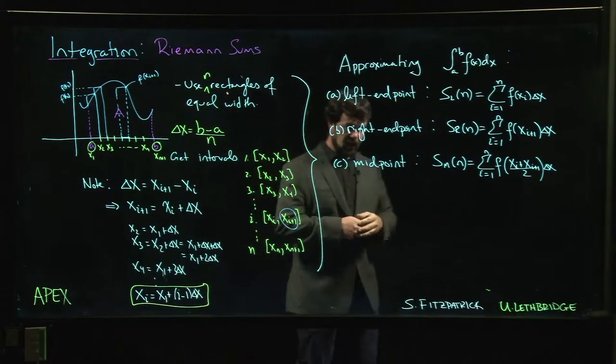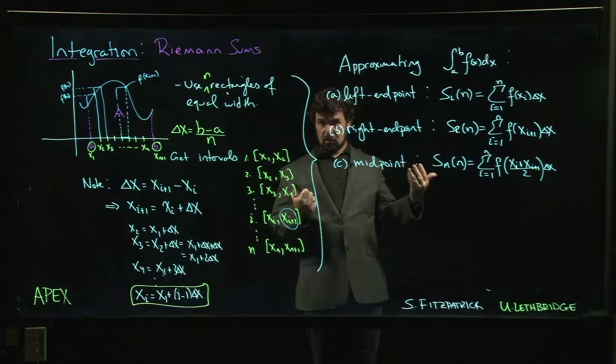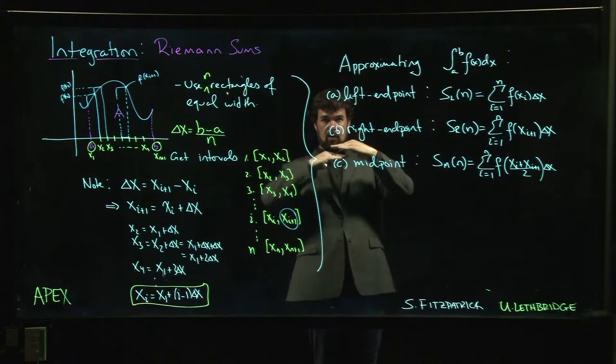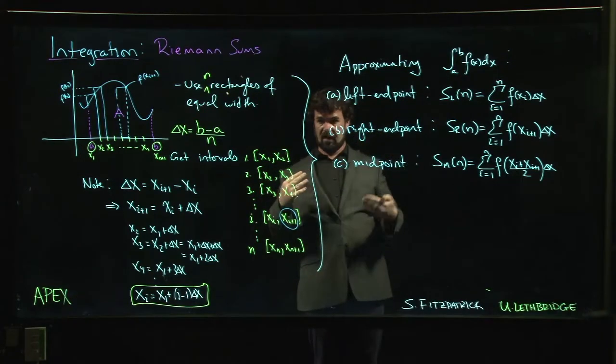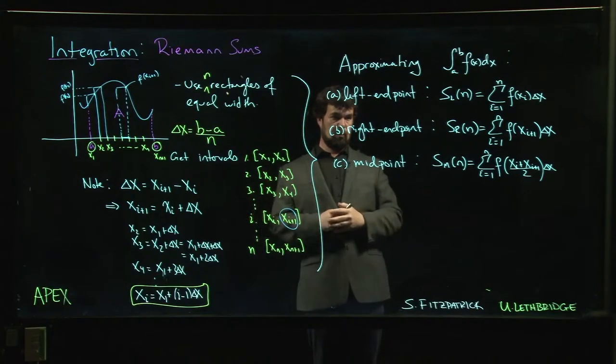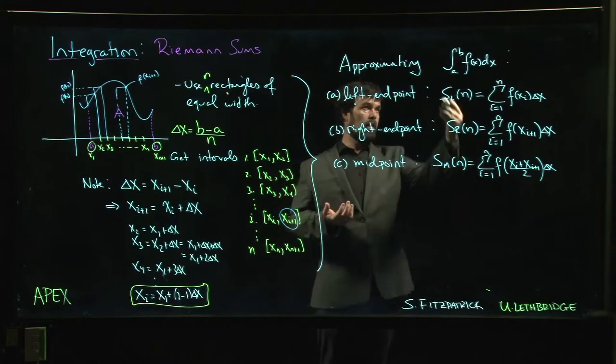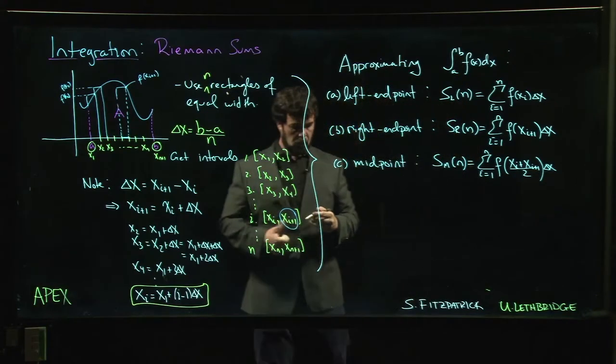And then you use limit arguments to show that those two values will come together as you increase the number of rectangles. And this is how you convince people that this actually makes sense, what we're doing here.